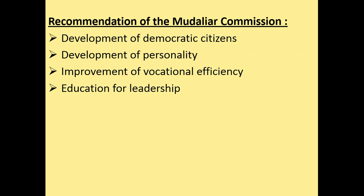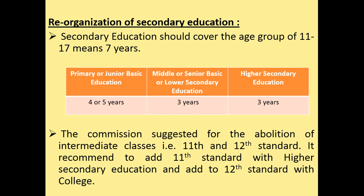If we classify the recommendation areas of the Mudaliar Commission broadly, we get four points: development of democratic citizens, development of personality, improvement of vocational efficiency, and education for leadership. Regarding the reorganization of secondary education, the commission recommended that secondary education should cover the age group of 11 to 17 years, meaning seven years.